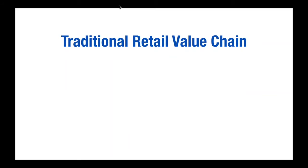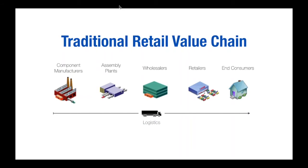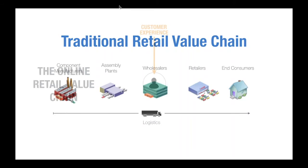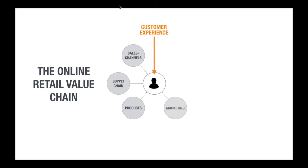Let's talk about how retail is changing. The traditional retail value chain goes from component manufacturers through assembly plants, wholesalers, and retailers — a very linear structure until a product reaches the end consumer. The online retail value chain, however, must put the customer experience at the center. And the customer experience in retail is anything but linear — it's very much a matter of connections, involving sales channels, supply chain, inventory, marketing efforts, CRM systems, and payments, all affecting customer experience.